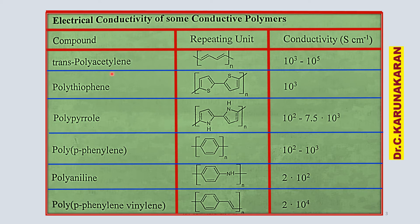There are different types of conducting polymers. Polythiophene is obtained from polymerization of thiophene. Their conductivity is measured in Siemens per centimeter. Among these polymers, trans-polyacetylene is one of the very highly conducting polymers, with conductivity of 10³ to 10⁵ S/cm, and the least conducting is polyaniline.